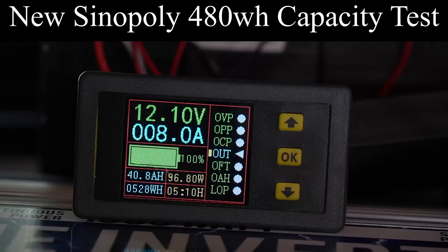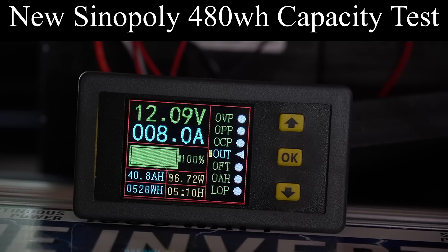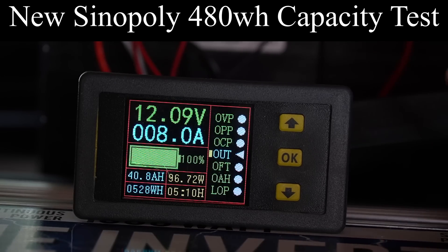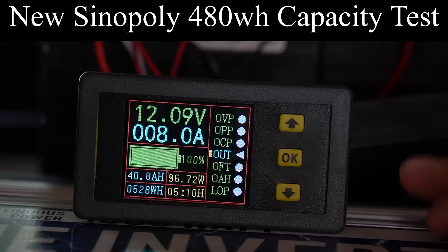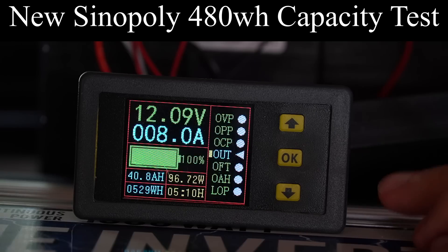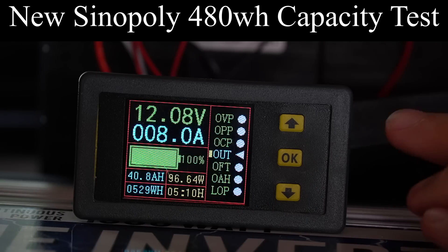So if we were testing at a nominal voltage of 12.8 volts it would give us 512 watt hours. And that's what lithium iron phosphate is made to do. So this is the first battery that can actually deliver at the nominal voltage of lithium iron phosphate which is very impressive.